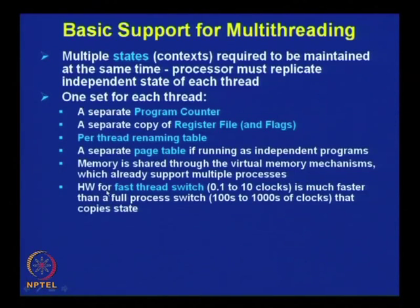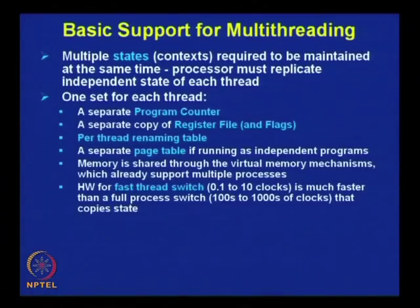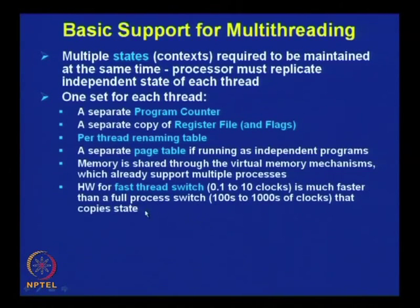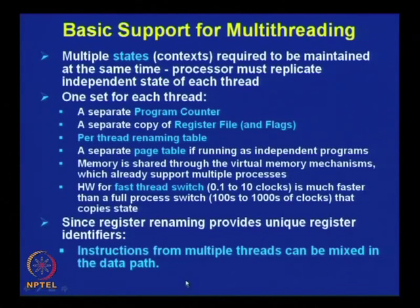Your hardware should provide fast thread switching. Whenever going from one thread to another, thread switching is much faster than process-level switching. For thread switching you require about 0.1 to 10 clock cycles, compared to 100 to 1000 cycles required for process switching. Moreover, since register renaming provides unique register identifiers, instructions from multiple threads can be mixed in the data path, so register renaming also helps in supporting multithreading.